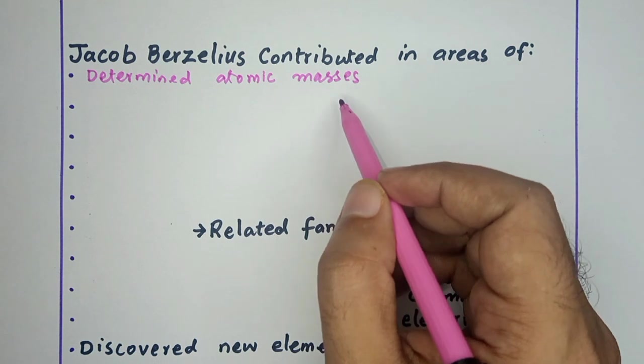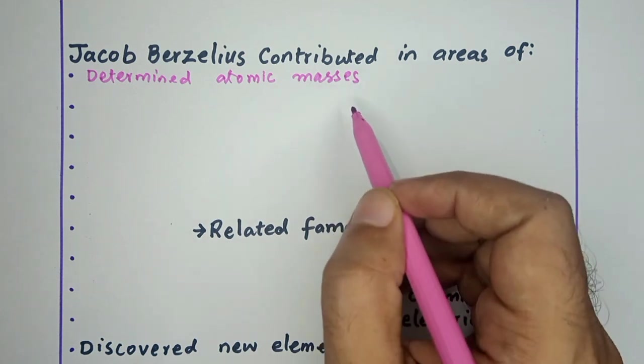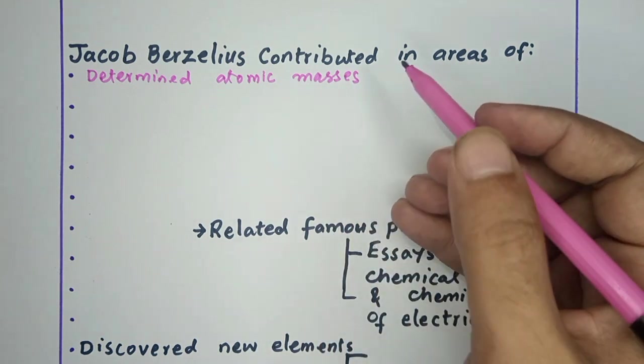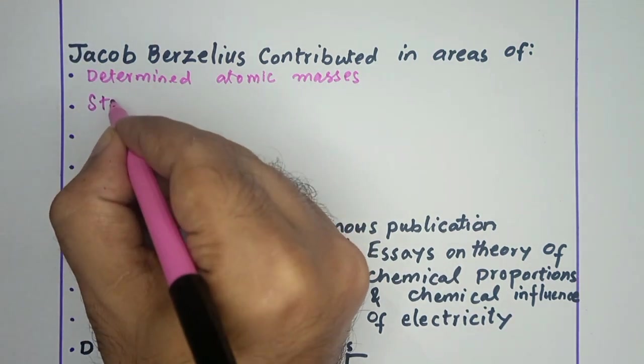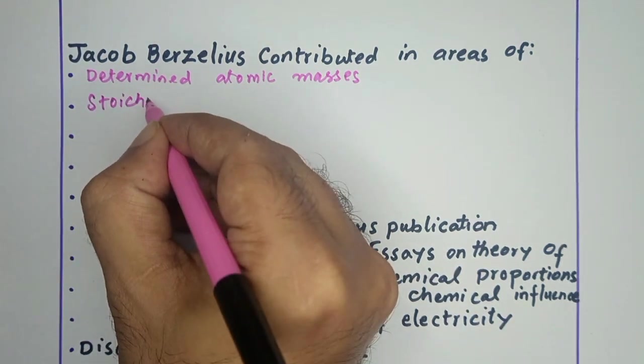Jacob Berzelius is the age of most experimental chemist. Jacob Berzelius has researched and contributed in the field of stoichiometry.